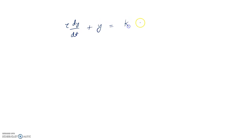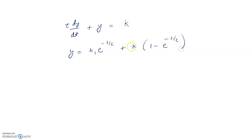Before that, I would like to show you a differential equation. Suppose tau dy/dt plus y is equal to k. So for this simple first-order differential equation, what we can write is: y is equal to k1 times e to the power minus t by tau, plus k times 1 minus e to the power minus t by tau. Here k1 is the initial value, k is the final value, and tau is the time constant.